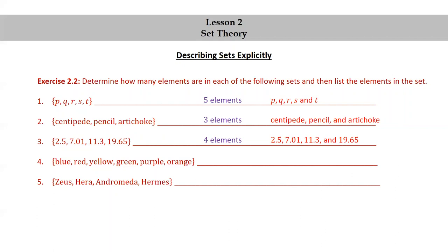Set of blue, red, yellow, green, purple, orange has six elements: blue, red, yellow, green, purple, and orange.